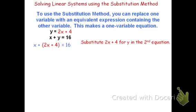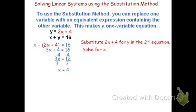Because it's just a plus sign in front of the parentheses, there's nothing to distribute. So what I have now is x plus 2x plus 4 equals 16. Combining like terms: x plus 2x is 3x, plus 4 equals 16. Subtract 4 from both sides, then divide by 3, and I get x equals 4.